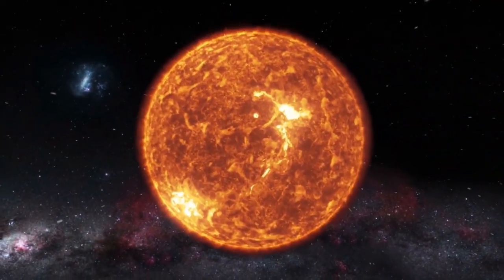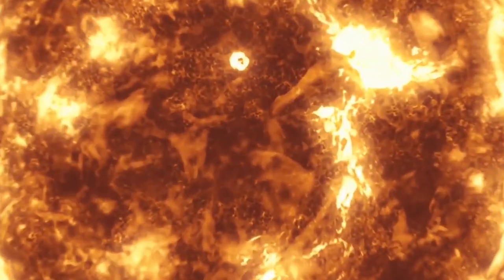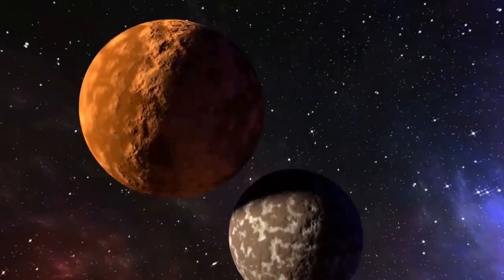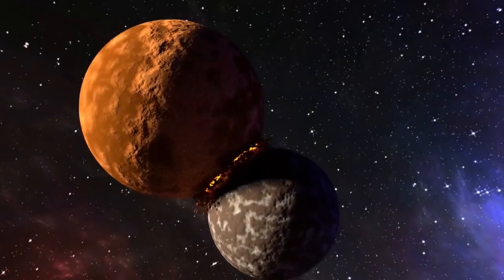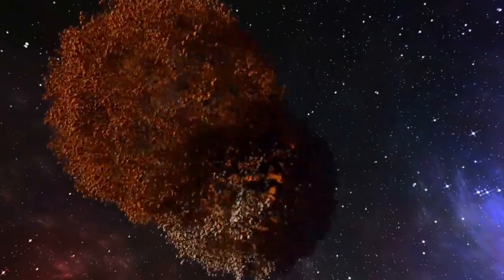Though our sun has coronal mass ejections that blow off small pieces of the outer atmosphere, astronomers have never witnessed such a large amount of a star's visible surface get blasted into space. Therefore, surface mass ejections and coronal mass ejections may be different events.